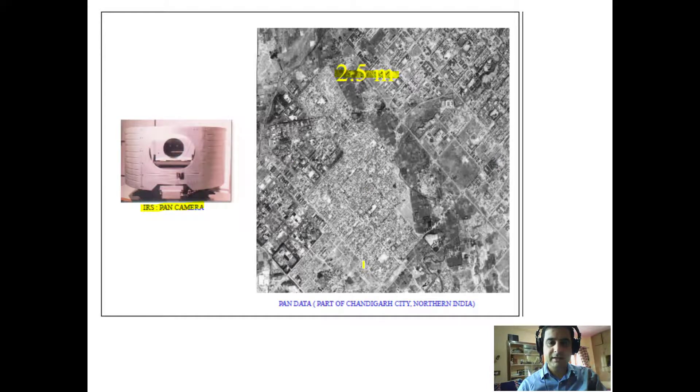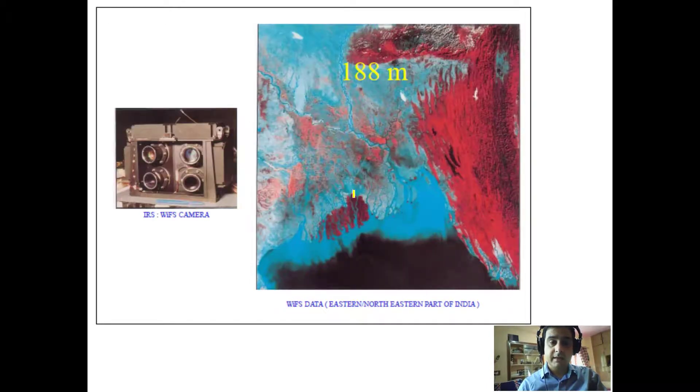Now this is the panchromatic single band image with a higher resolution, 2.5 meter resolution in this part of the Chandigarh city. And you can see the network of roads can be clearly seen with this because the resolution of the image is a little high. And this is the wide field sensor camera of the Indian remote sensing satellite with a very wide swath but the resolution is not very fine.